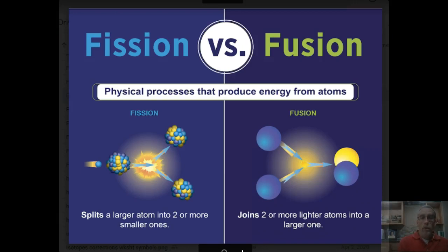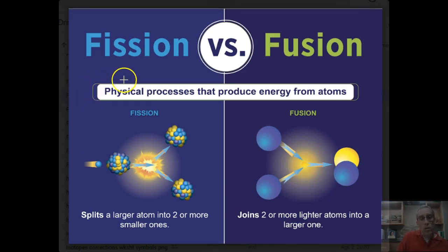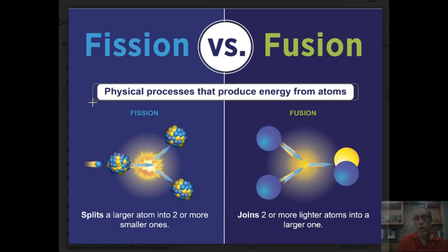I recommend first that you just kind of describe fission versus fusion in terms of the definition. What they have in common is what you see here in this white box. They're both physical processes, they both produce energy, and it's all about energy that is sort of hidden or stored within the atoms — in particular, the nucleus of the atoms. We talked back when we studied chemistry in first semester about energy stored in the electrons; that's chemical energy. This is a very different and much, much greater amount of energy — real power in these nuclear reactions.